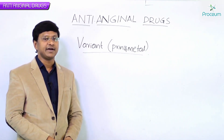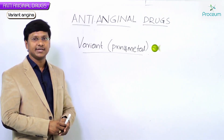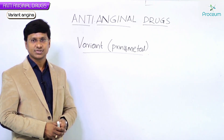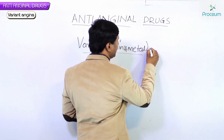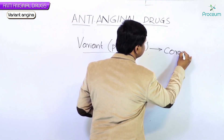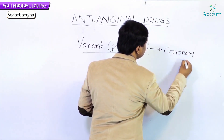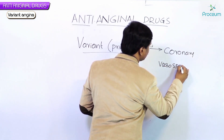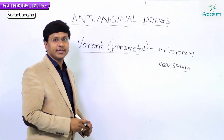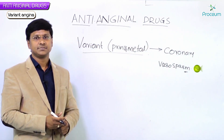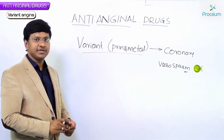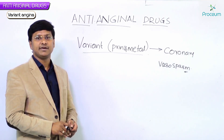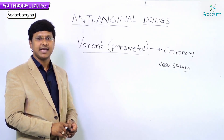Now let me discuss the third type of angina — variant angina, or Prinzmetal angina. This is basically caused by coronary vasospasm. Whenever there is coronary vasospasm, it will acutely decrease the coronary blood flow and precipitate the angina.